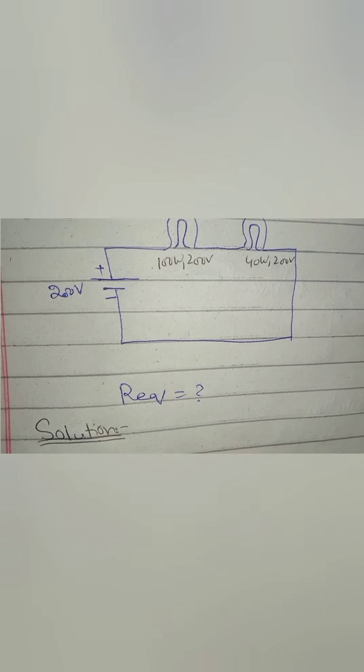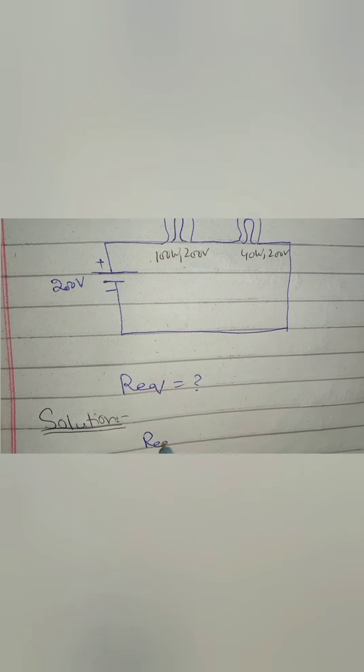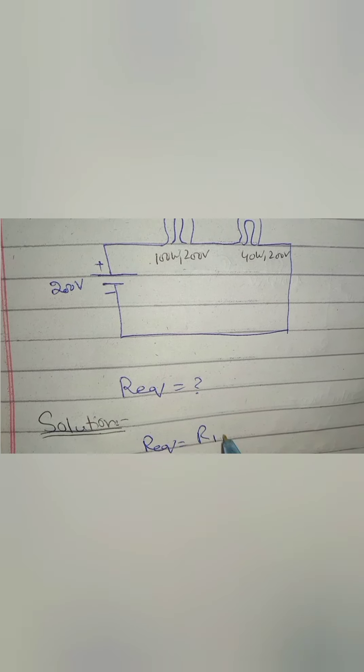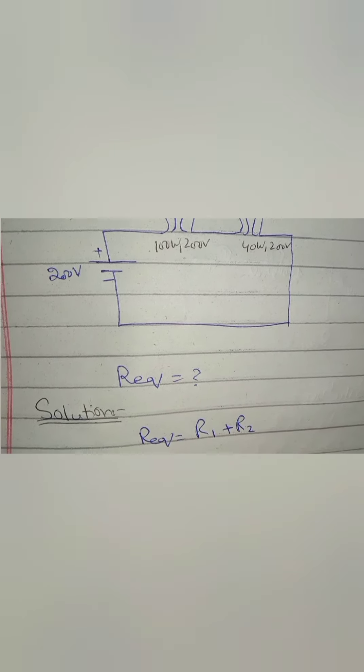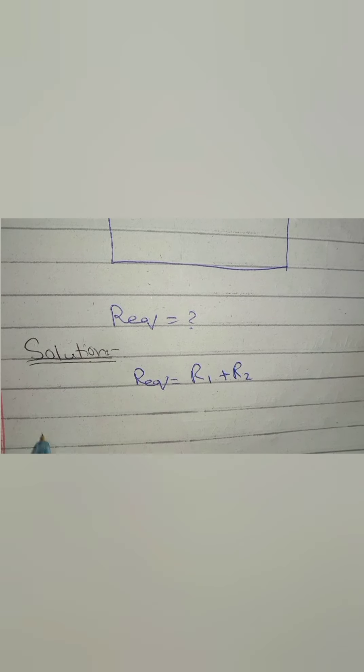We have to find the R equivalent of the circuit. As the bulbs are connected in series, R equivalent of the circuit will be R1 plus R2. R1 is the resistance of first bulb and R2 is the resistance of second bulb.